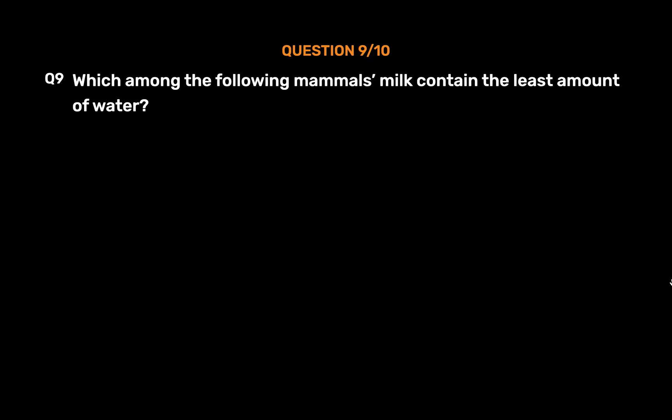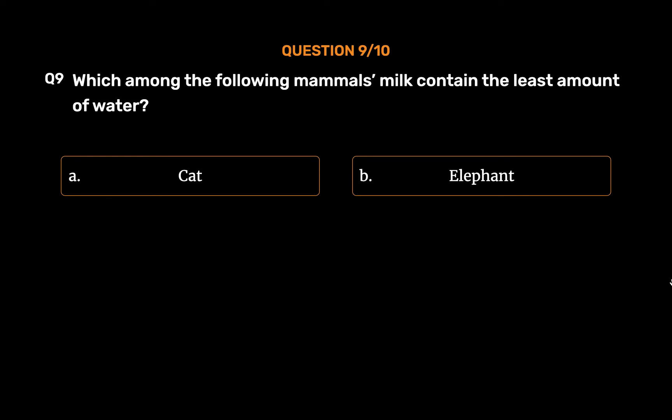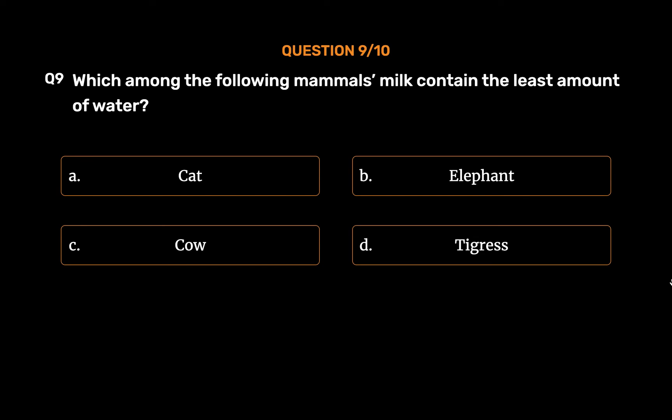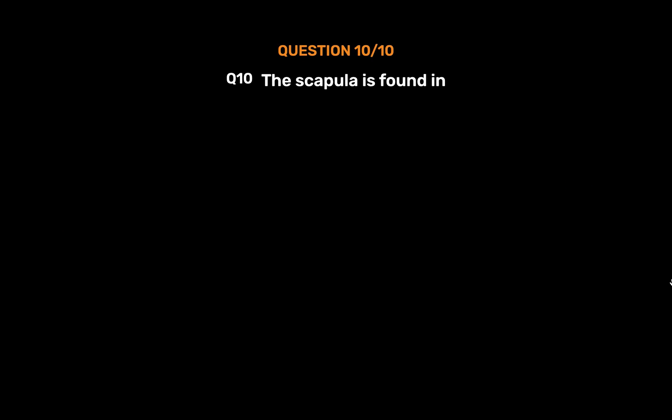Question No. 9. Which among the following mammals' milk contains the least amount of water? Option A: Cat. Option B: Elephant. Option C: Cow. Option D: Tigress. The correct answer is Option B: Elephant.